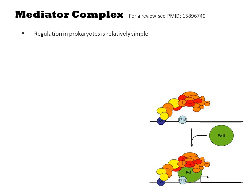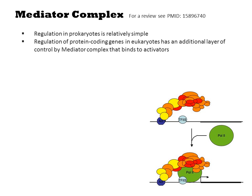Regulation in prokaryotes is believed to be relatively simple. There's the sigma-70, and if it binds to the promoter, transcription occurs. If it doesn't bind, nothing else happens. In eukaryotes, there's an additional layer of control by the mediator complex that binds to activators and recruits the polymerase.